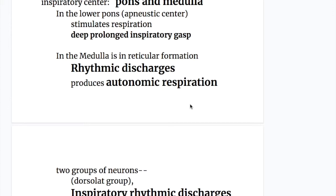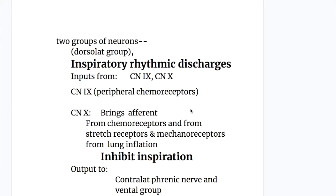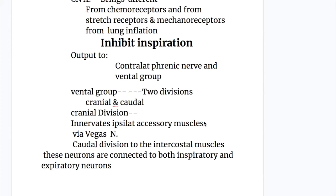There are two groups of inspiratory neurons in the medulla: the dorsal group and the ventral group. The dorsal group produces inspiratory rhythmic discharges and has inputs and outputs. Inputs come from cranial nerve 9 (glossopharyngeal nerve) and cranial nerve 10 (vagus nerve). CN9 brings impulses from peripheral chemoreceptors; the vagus brings afferents from chemoreceptors, stretch receptors, and mechanoreceptors from the lungs — when lungs are inflated, these inhibit inspiration. Output goes to the contralateral phrenic nerve. The ventral group consists of cranial and caudal nuclei: the cranial division innervates ipsilateral accessory muscles via the vagus nerve, and the caudal division innervates the intercostal muscles. These neurons connect to both inspiratory and expiratory neurons.